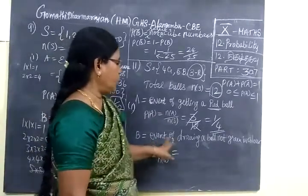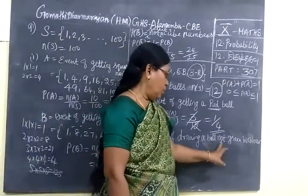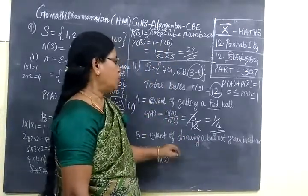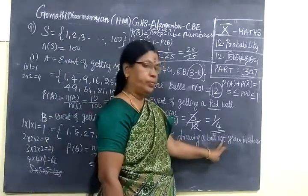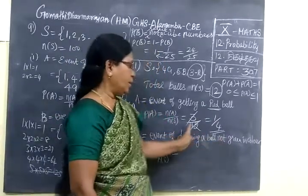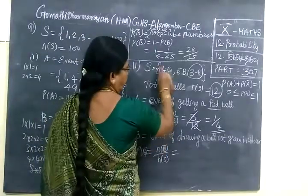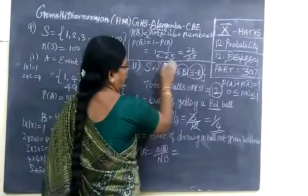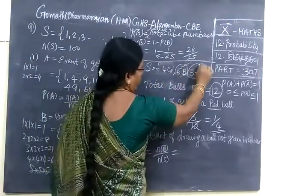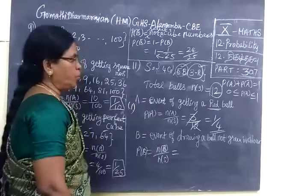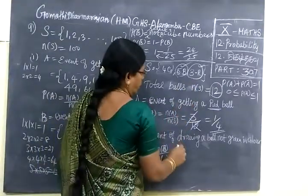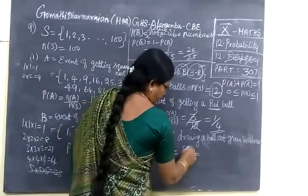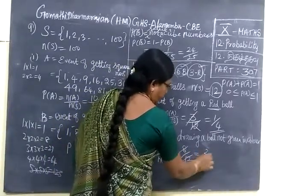Then event of drawing a ball not green in color. The colored ball is not green. That means we are selecting the other colors. Not green means blue and red. So blue and red means if you total it you are getting 8. So 8 by 12. The answer is if you cancel, 4 table, 2 by 3.